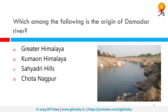Which among the following is the origin of Damodar river? The correct answer is Chotanagpur. Damodar river is a river flowing across the Indian states of Jharkhand and West Bengal. Rich in mineral sources, the valley is home to large scale mining and industrial activity.